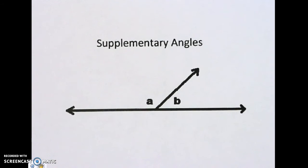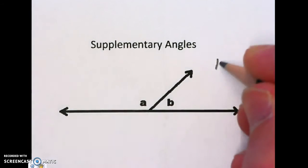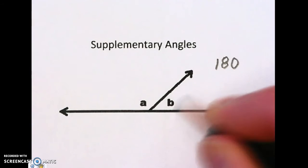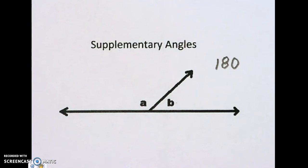Another one is supplementary. Two angles that make a straight line add up to 180 degrees. If you have one of them, you can figure out the other one by subtracting from 180.